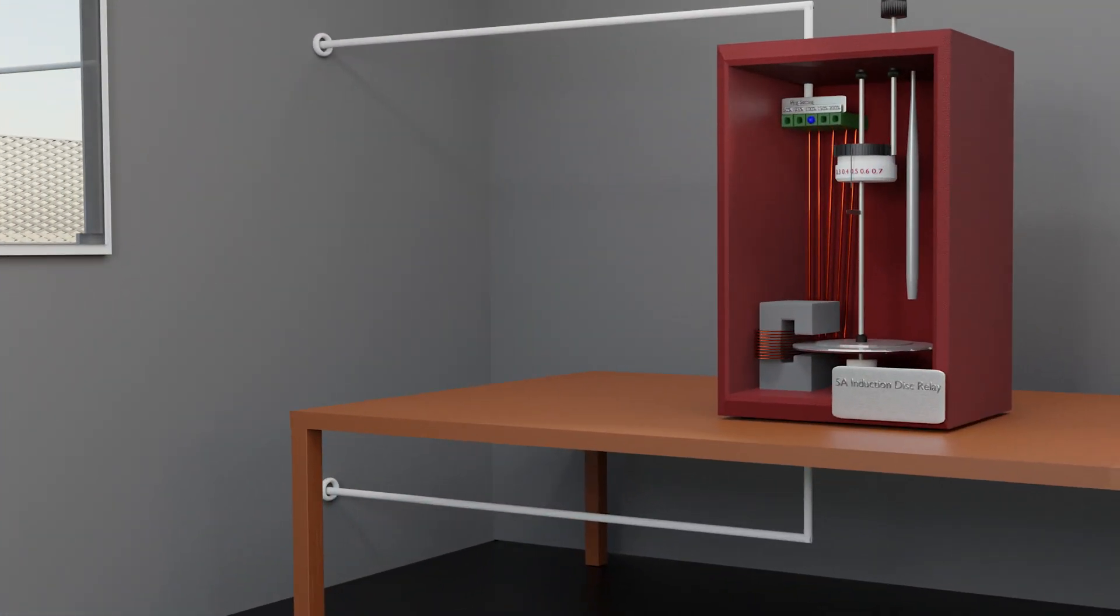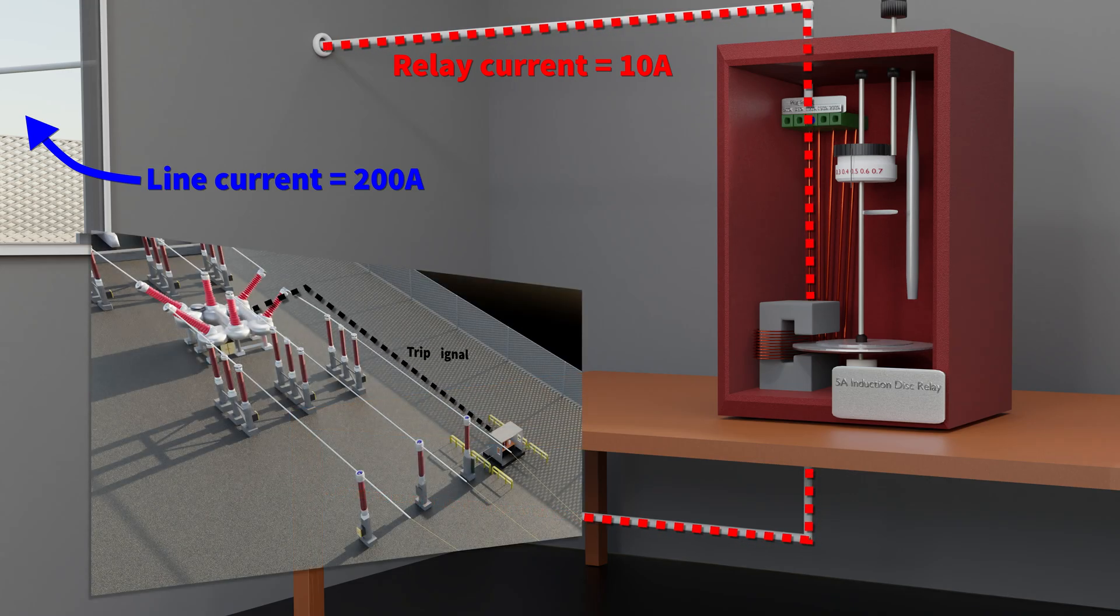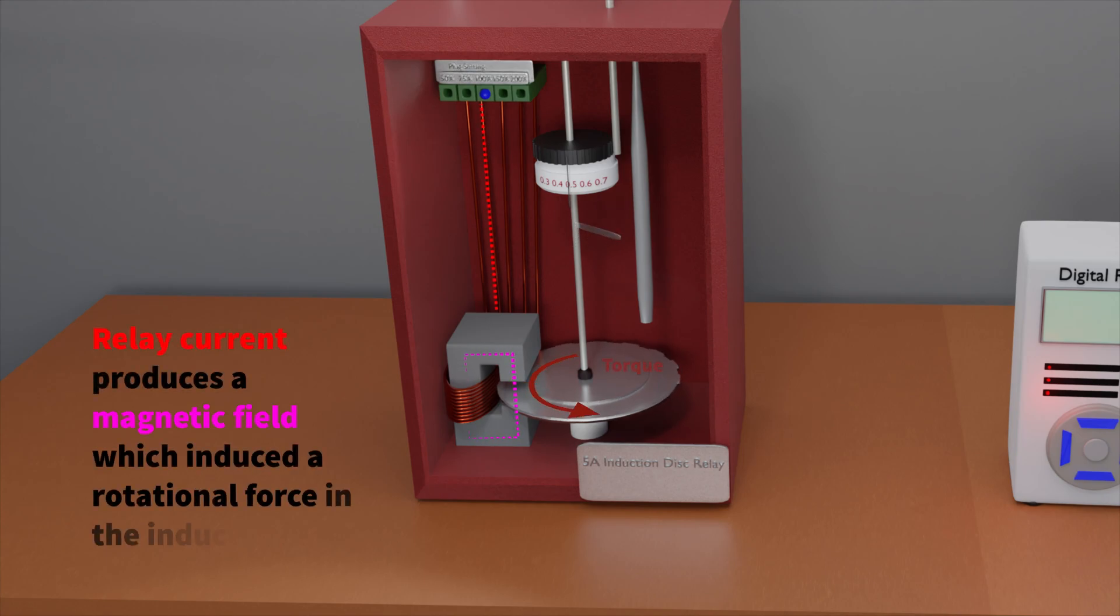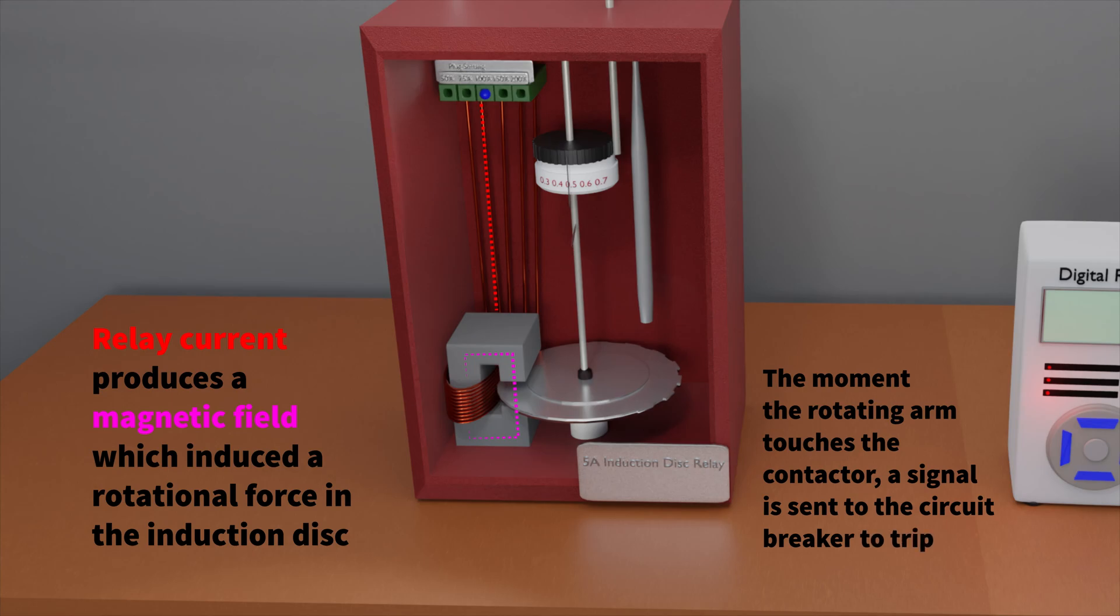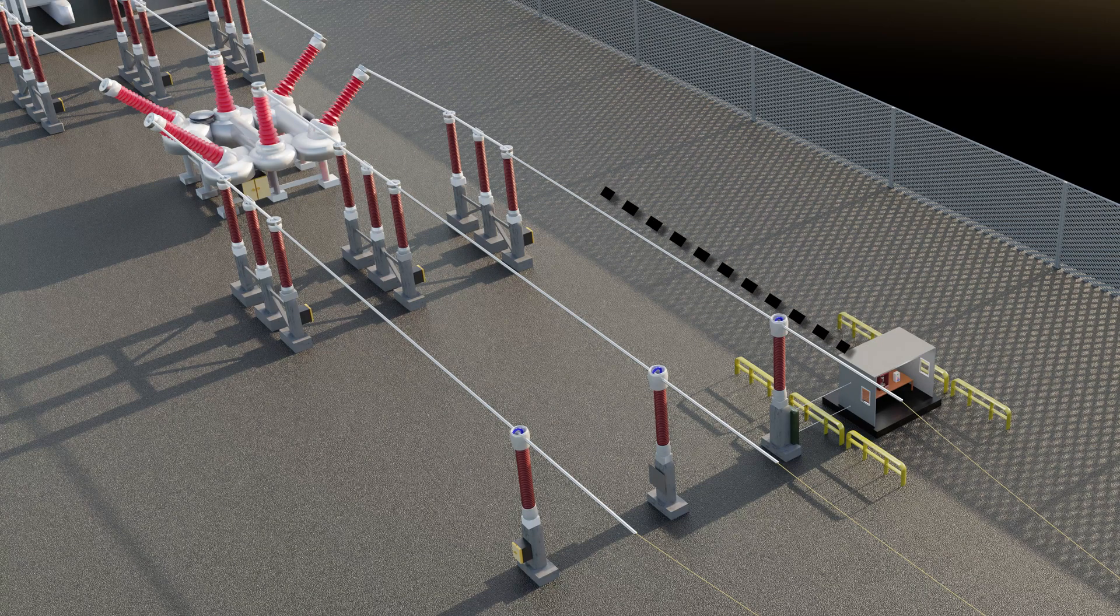Inside the relay let's take a look at what happens when we have a 200 amp line current and a 10 amp relay secondary current. The current through the relay has generated a magnetic field which induces a torque in an induction disk. The induction disk therefore rotates and if it rotates far enough a rotating arm hits a contact and this initiates the instruction to the circuit breaker.